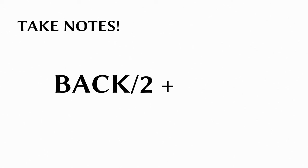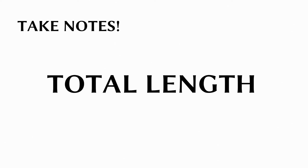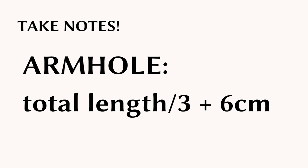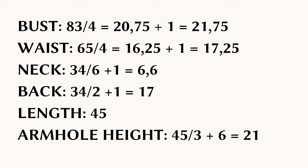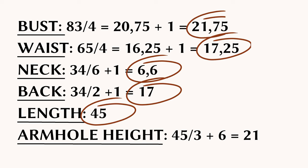Divide the back by 2 and add 1 cm for seam allowance. For the total length, you don't need to alter anything. For the armhole height, divide the total length of the bodice by 3 and add 6 cm. When I say the names of those measurements from now on, I will mean the ones we already calculated. Now we're ready to draft the pattern.